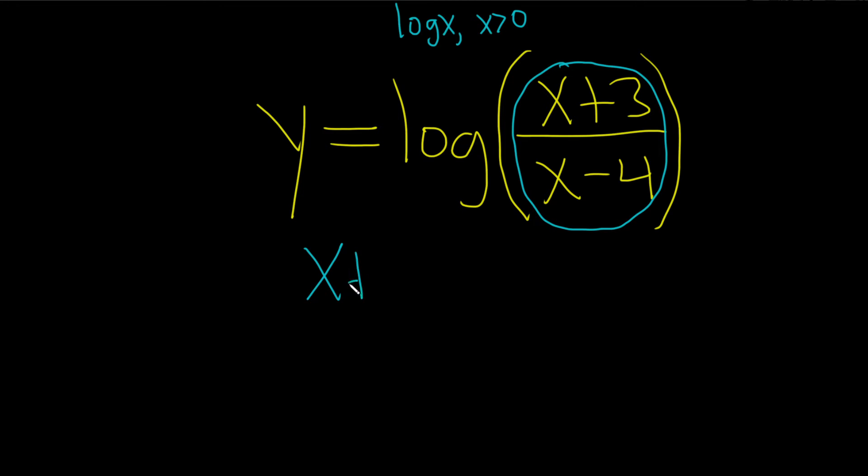So we take x plus 3 over x minus 4, and we set it greater than 0. So step 1, when you're looking for the domain of a log function, is to always just take whatever is here and set it greater than 0.